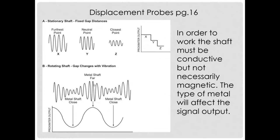We use displacement probes when vibration is not well transmitted through the machine case. The oscillator sends out a high-frequency signal that creates its own magnetic field. As the gap between our metal object and our probe changes, it changes the magnetic field, which changes the ability of the oscillator to keep making the same oscillation — and that change is measured by the detector. Although the probe is threaded directly into the machine, we see there is a gap we're measuring — that's why we call this non-contacting.